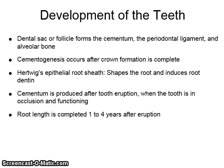Cementogenesis, the formation of cementum, occurs after crown formation is complete. An epithelial structure called the Hertwig epithelial root sheath proliferates to shape the root of the tooth and induces the formation of the root dentin. Cells of the Hertwig epithelial root sheath must break up and pull away from the root surface before cementum can be produced. Very little cementum is produced until the tooth has erupted and is in occlusion and functioning. Root length is not completed until one to four years after the tooth erupts into the oral cavity.